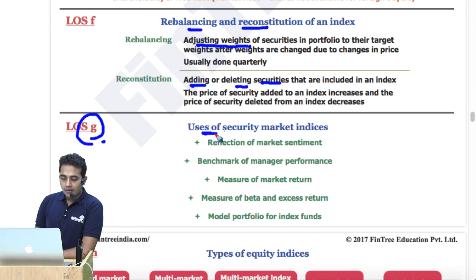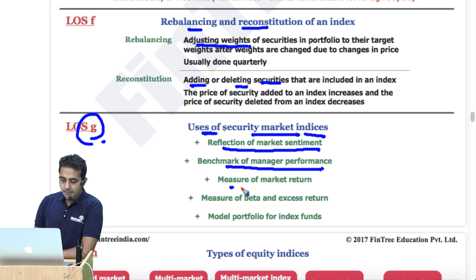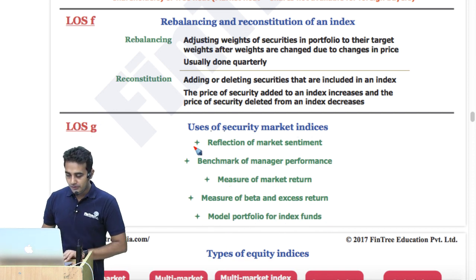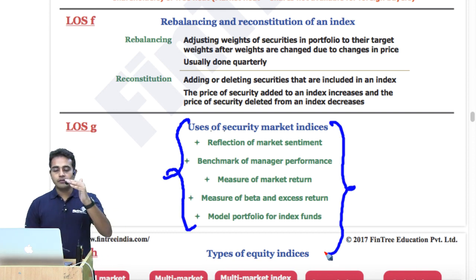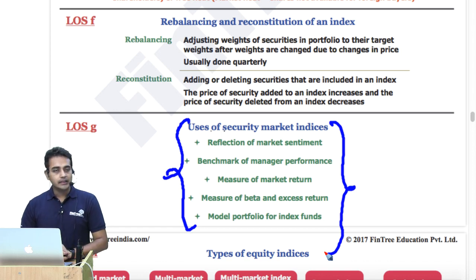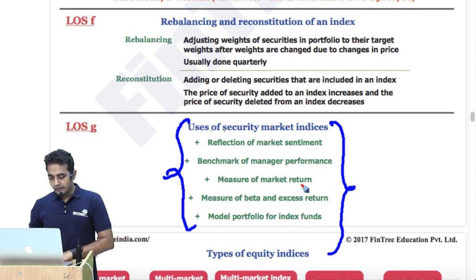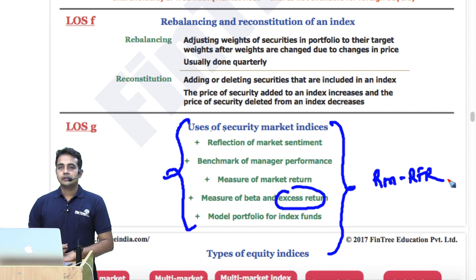Learning outcome G: uses of security market indices. These include reflection of market sentiment, benchmark of manager performance, measure of market return, measure of beta and excess return, and model portfolio for index funds. There could be a theory question asking which one of the following is not a use of a security market index. Excess return is RM minus RF — that is the numerator of your Sharpe ratio, return on markets minus the risk-free security.